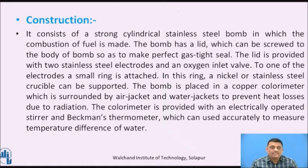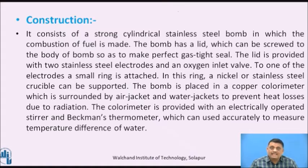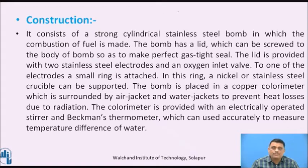The bomb calorimeter consists of a strong cylindrical stainless steel bomb in which the combustion of fuel takes place. The bomb has a lid which can be screwed onto the body to make a perfect gas-tight seal. The lid is provided with two stainless steel electrodes and an oxygen inlet valve. To one of the electrodes, a small ring is attached at the bottom, in which a nickel or stainless steel crucible can be supported. The bomb is placed in a copper calorimeter which is surrounded by an air jacket and water jacket to prevent heat losses due to radiation. The calorimeter is provided with an electrically operated stirrer and thermometer to measure the temperature difference of water before and after combustion.